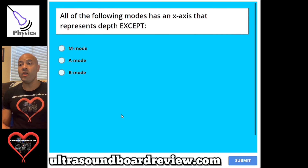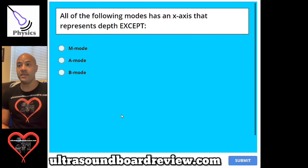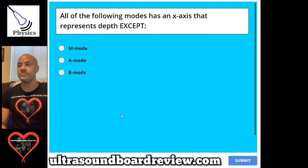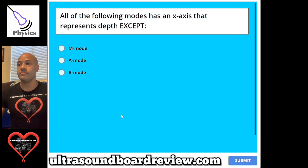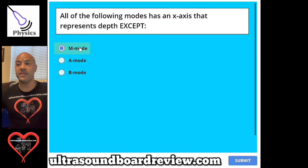Question 78. All of the following modes have an x-axis that represents depth except: A, M mode; B, A mode; or C, B mode. The answer is A, M mode. The x-axis on M mode represents time.